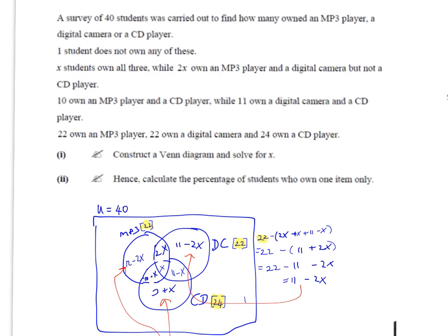This 2x comes from this sentence: while 2x own an MP3 player and a digital camera but not a CD player. That's important that they say but not a CD player. That means the 2x only goes into this area; it couldn't be a CD player, so 2x doesn't belong here.